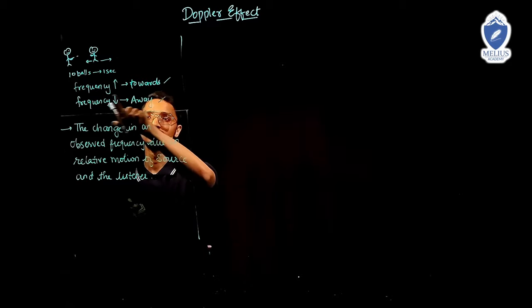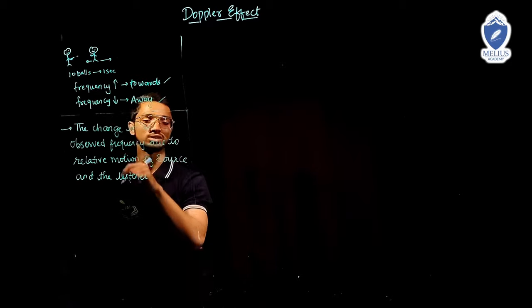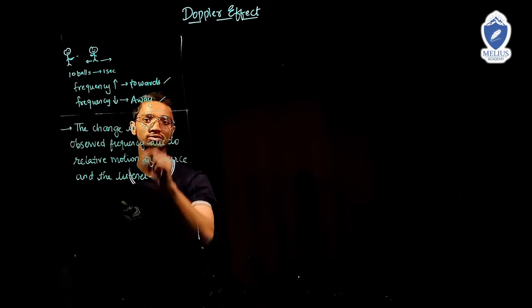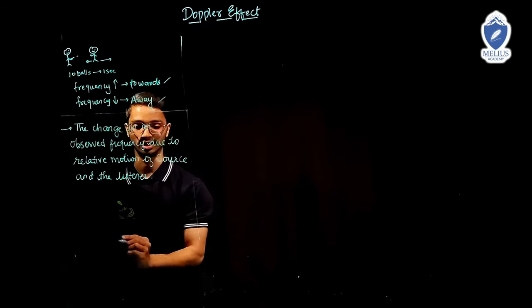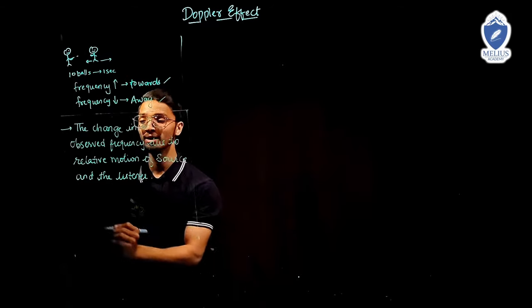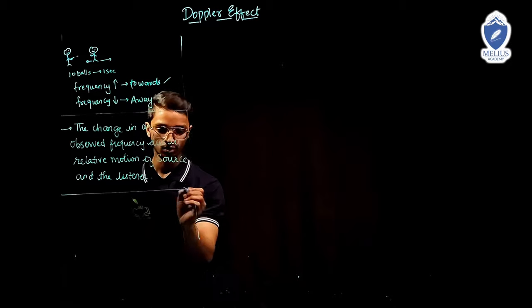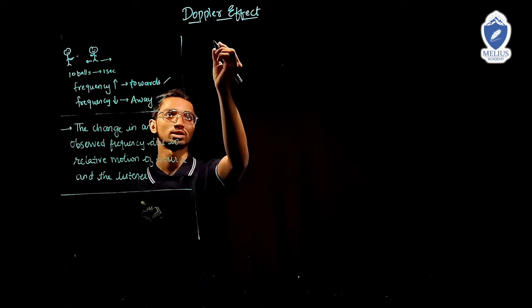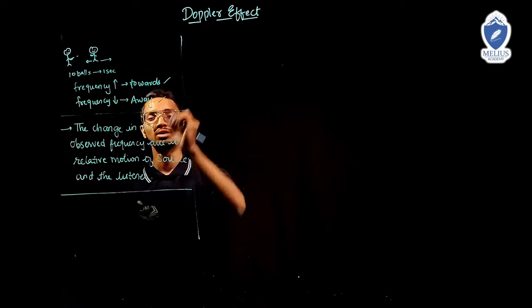Did you understand? If we come towards the source, the frequency goes increasing; and if we go away from the source, the frequency will decrease. Now, to understand, there is only one formula for Doppler effect. Let us learn that one formula.